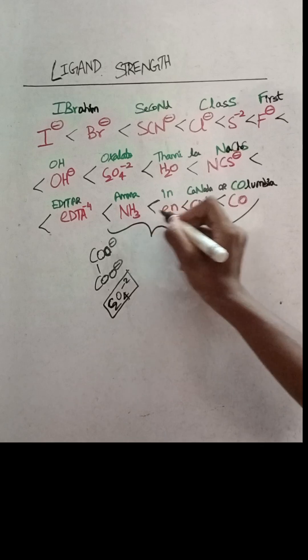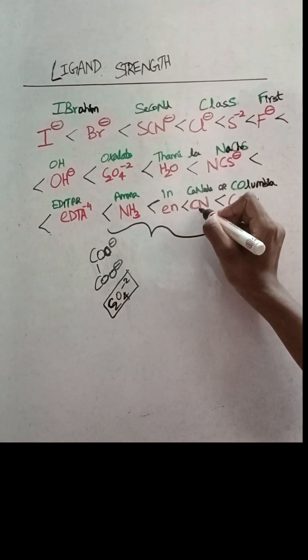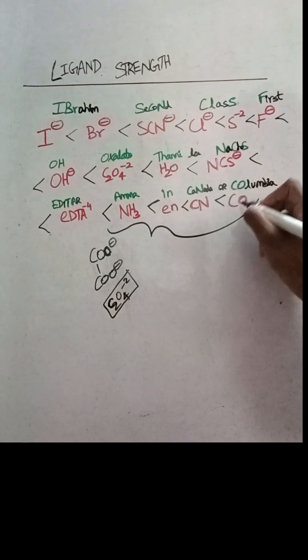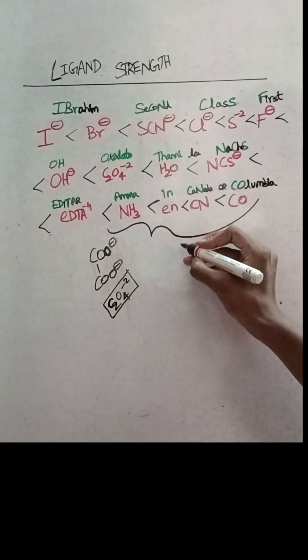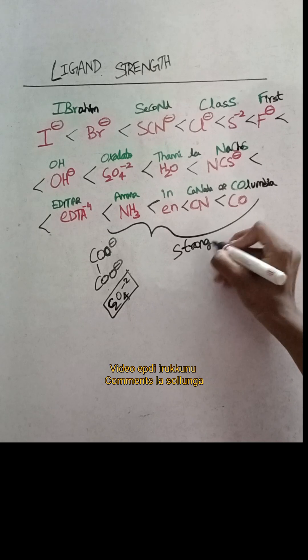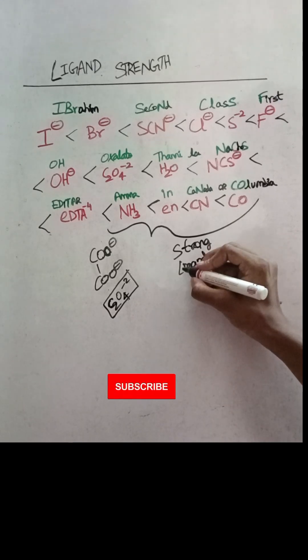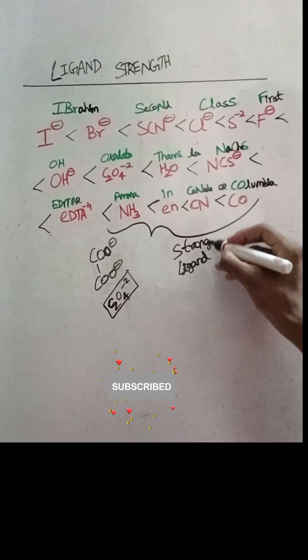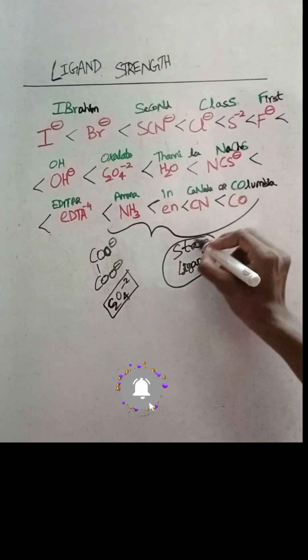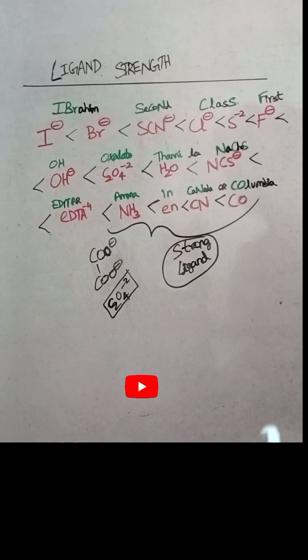The ammonia. En. Let's say these are strong ligand. They can also use weak ligand. That is the content of ligand strength.